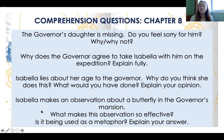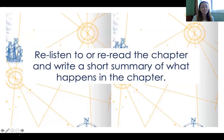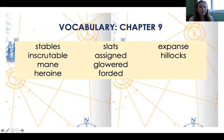Chapter eight questions: The governor's daughter is missing — do you feel sorry for him at this point, why or why not? Why does the governor agree to take Isabella with him on the expedition? She lies about her age to the governor — why do you think she does that, and what would you have done? Remember, not everything is written for you — a lot is left for you to infer. Isabella makes an observation about a butterfly in the governor's mansion at the end of the chapter — what makes this observation effective, and is it being used as a metaphor? If so, what does it represent?